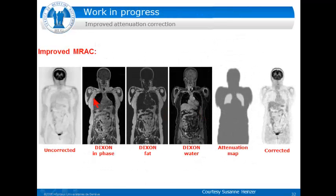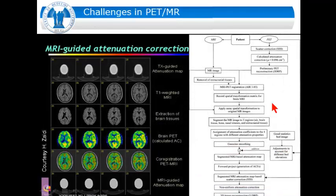We are working with in-phase imaging, fat imaging, and water imaging from these sequences to create the attenuation map and then generate the corrected PET images.